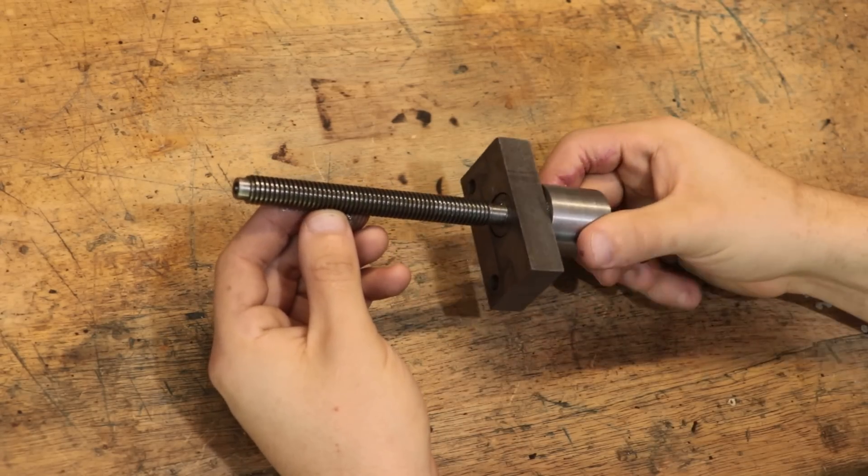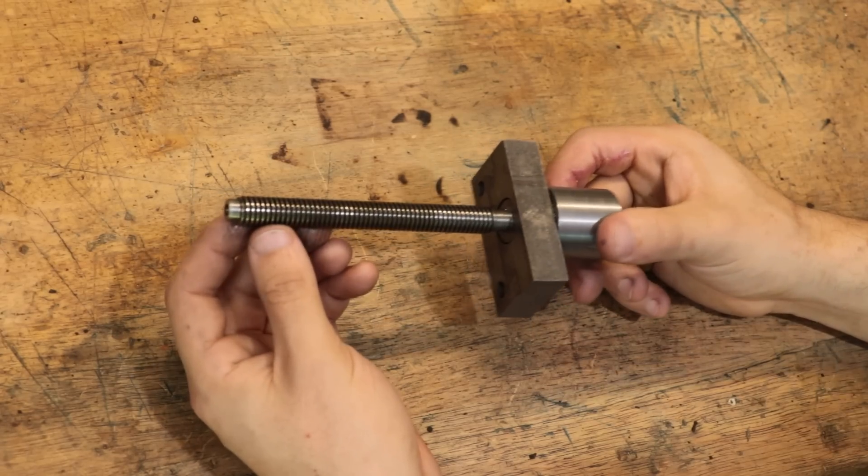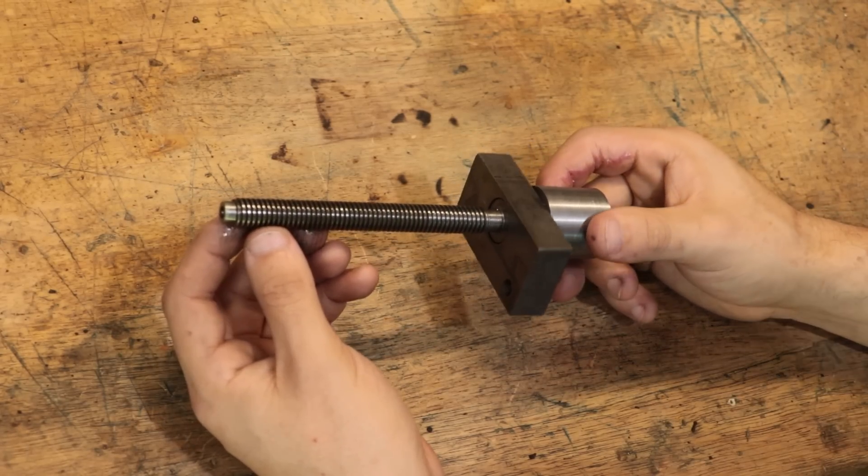It's the lead screw from the lathe's top slide. Now, to put a long story short, as much as I like the lathe, the top slide is one of the weaker parts of it.